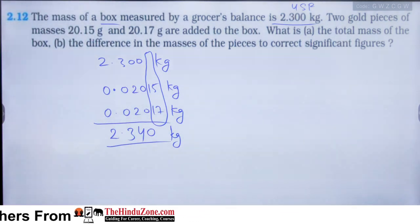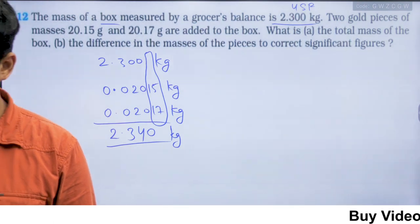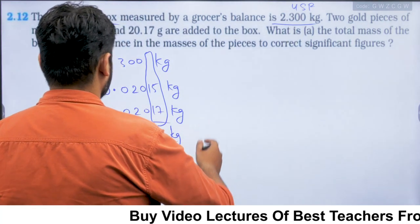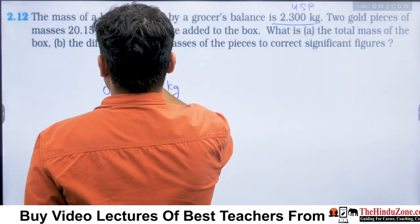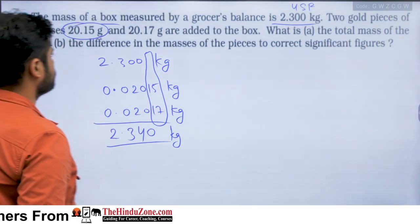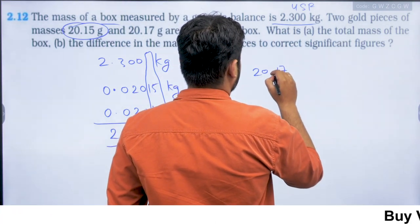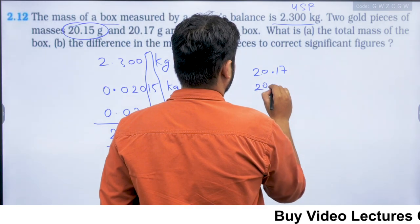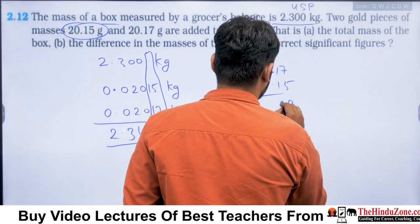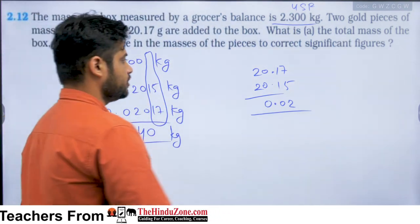So the total mass of the box is 2.340 kg. The second part asks for the difference in masses of the two pieces to correct significant figures. One is 20.17 g and one is 20.15 g — both given in grams. The decimal point is the same, so we subtract: 20.17 − 20.15 = 0.02 g. The difference is 0.02 grams.